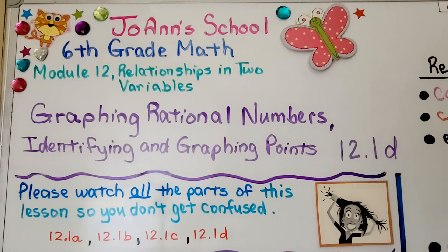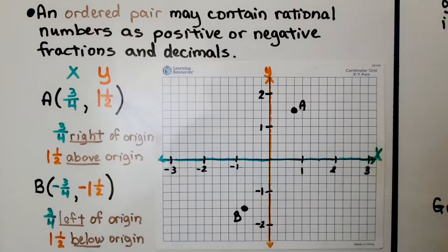Lesson 12.1d: Graphing Rational Numbers — Identifying and Graphing Points. An ordered pair may contain rational numbers as positive or negative fractions and decimals.